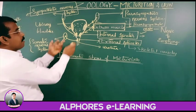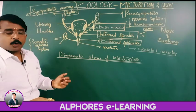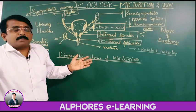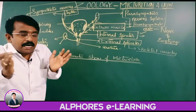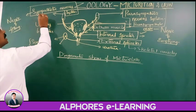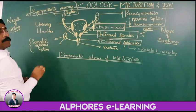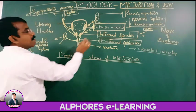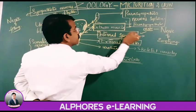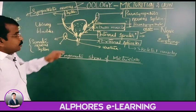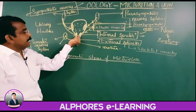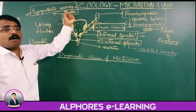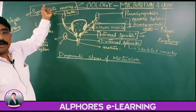The relaxation of the detrusor muscles causes the dilation of the urinary bladder. At the same time, the nervous supply by sympathetic nervous system causes the contraction of the internal sphincter — so it is closed, the bladder is dilated, and urine goes on filling in the urinary bladder.